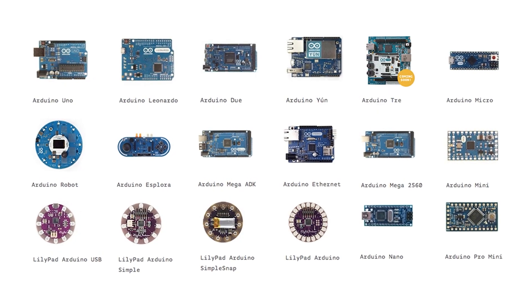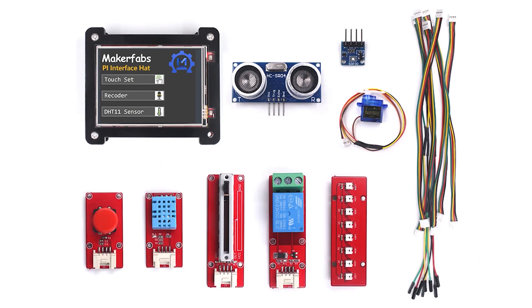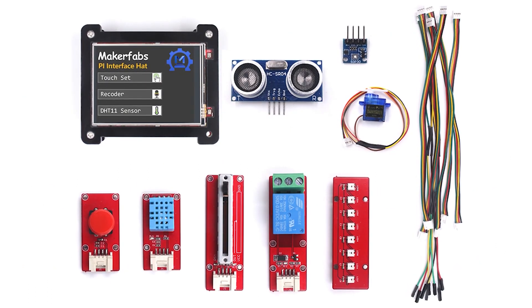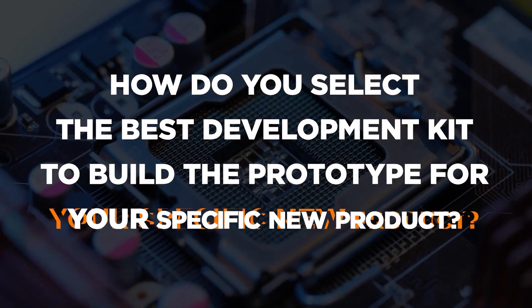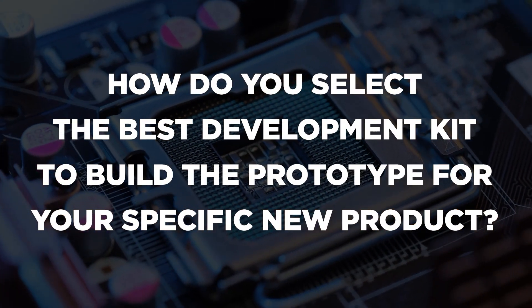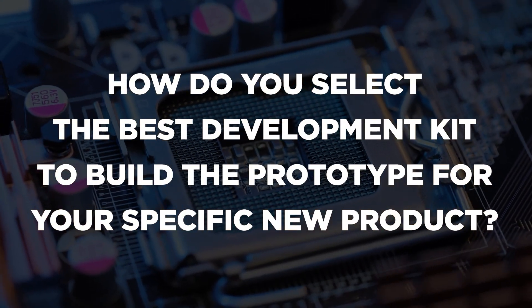There are a lot of different electronic development kits available that can be used to build an early proof of concept prototype for a new product. But how do you select the best development kit to build the prototype for your specific new product? If you select the wrong kit then it may not be able to do what you need it to do, or it will be really difficult to transition it to production. These kits are rarely used for production because of their cost and large size, but they are fantastic options for creating an early functional prototype.